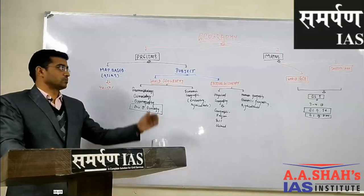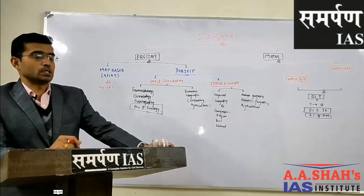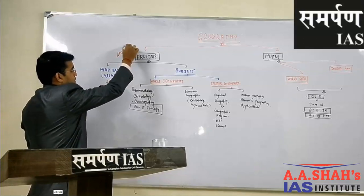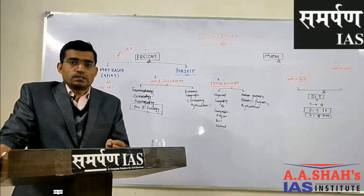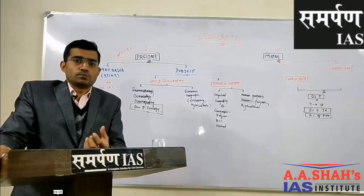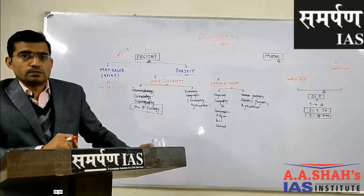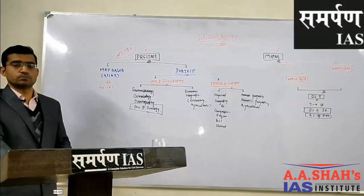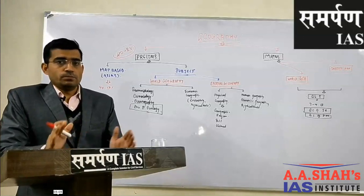If we look at UPSC, around 20 to 25 questions come in any form of geography. If we divide these 20 to 25 questions, we will see that some questions are direct map-based. A few books come from this, like Oxford Student Atlas, which we will suggest to students. Oxford Student Atlas can give you around 40 to 50 percent of questions from the map base.